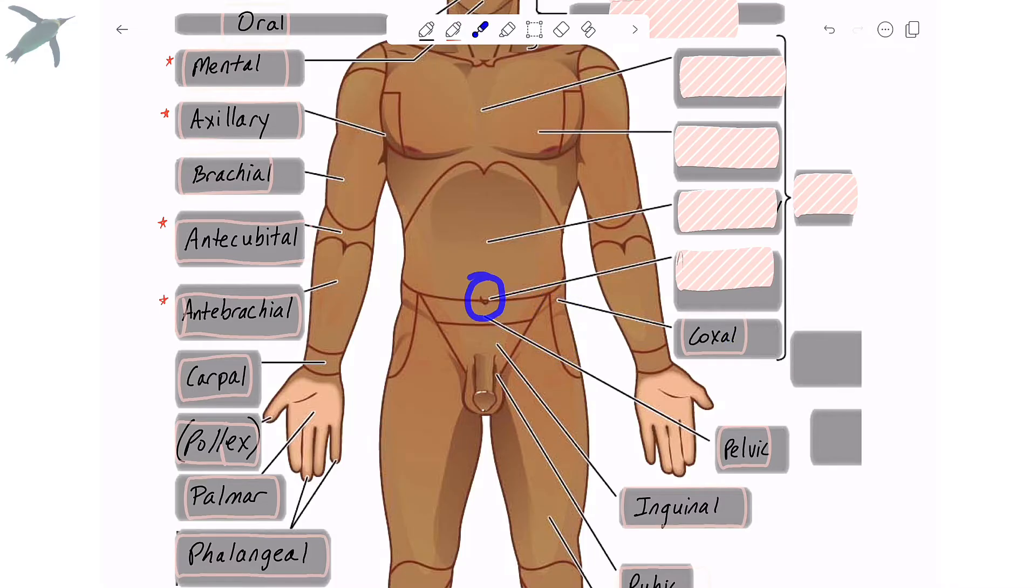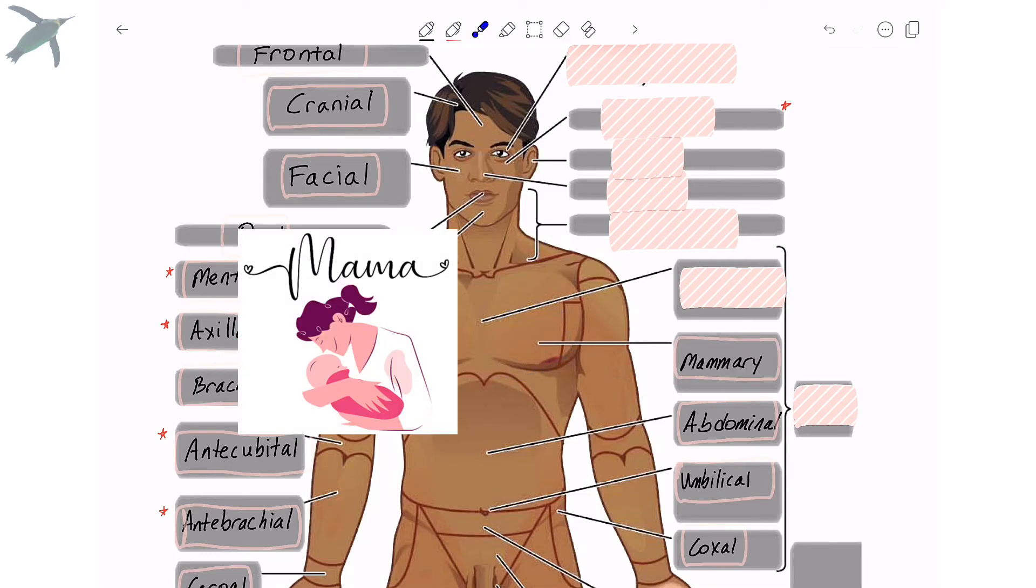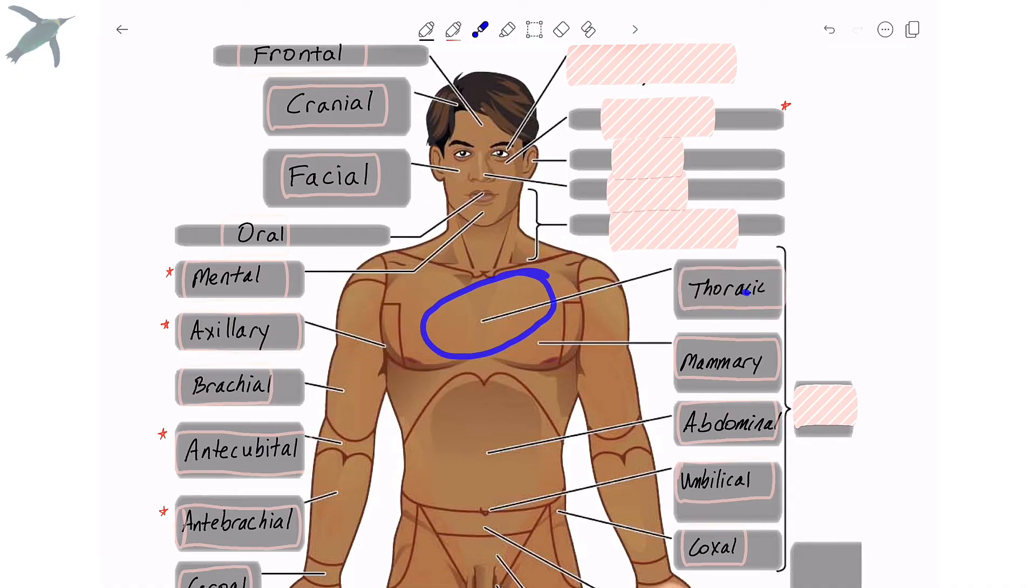The region around your navel or your belly button is the umbilical region. This whole large area here is the abdominal region. The breast area is referred to as the mammary region, from the Latin mama, which means mother. The chest is the thoracic region.